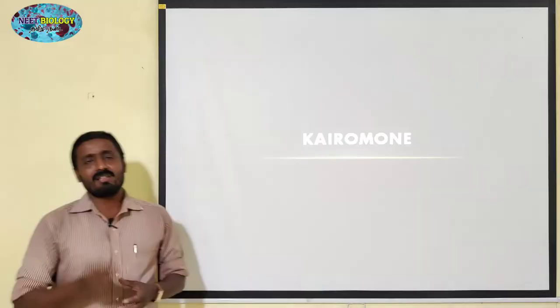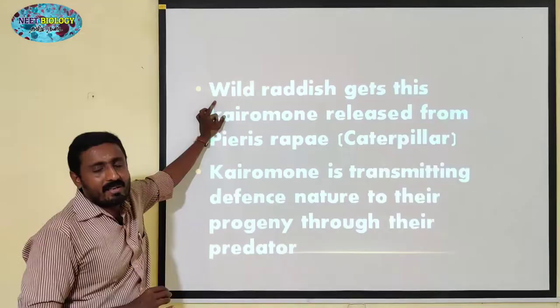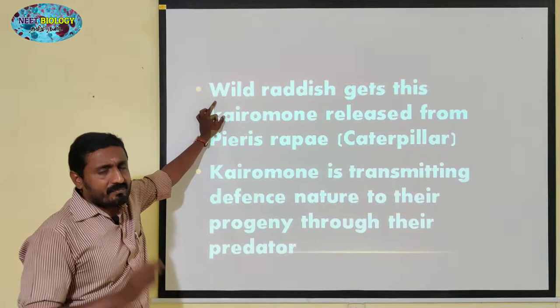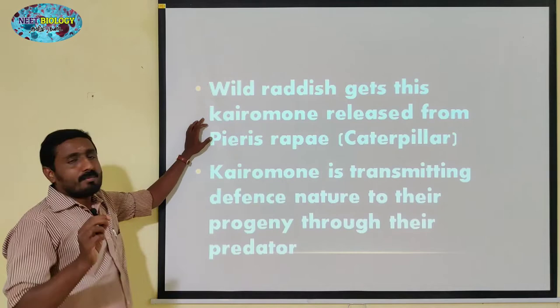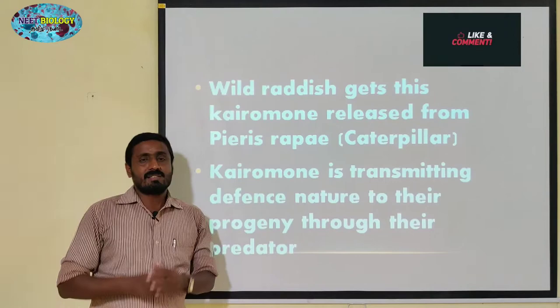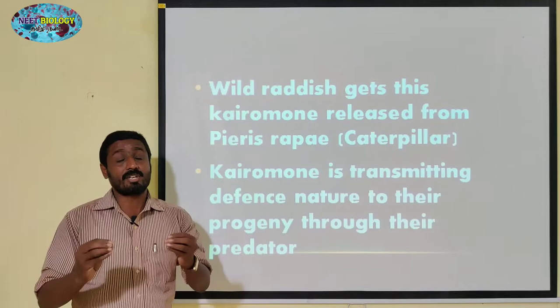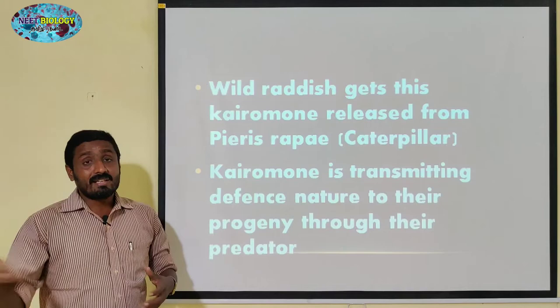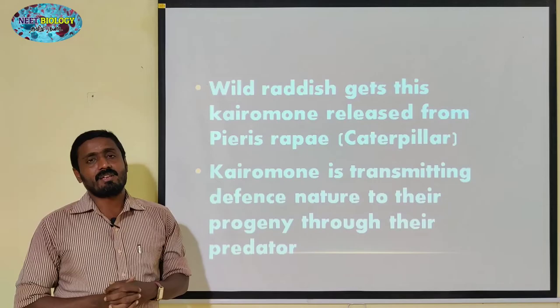The first example is wild radish. There is a garden vine, which is called a garden vine. This garden vine is meant for protection — it is for one generation. So, what is the purpose of this caterpillar in relation to the garden vine?